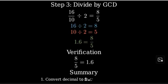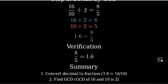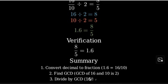Let's review the steps we took. First, we converted the decimal to a fraction by moving the decimal point and multiplying by 10. Then, we found the greatest common divisor of the numerator and denominator. Finally, we divided both the numerator and denominator by the GCD to get our simplified fraction.